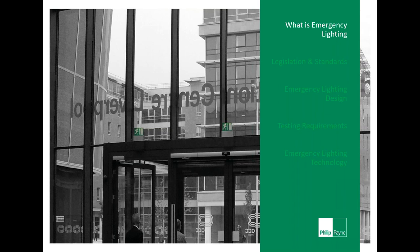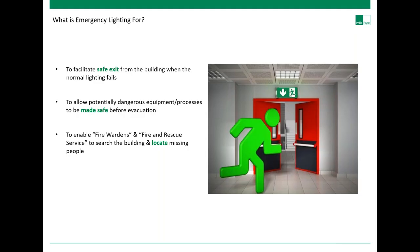So what is emergency lighting for? It is provided to enable the safe exit from a location in the event of a failure of the normal building electrical supply, and to allow potentially dangerous equipment or processes to be made safe before evacuation, and to ensure firefighting and safety equipment can be readily located and used. Emergency lighting is very important.